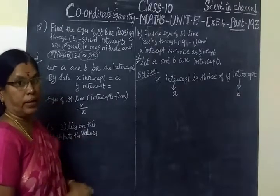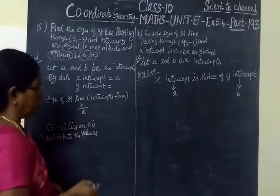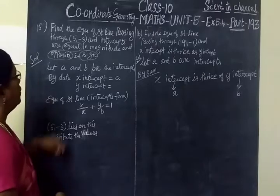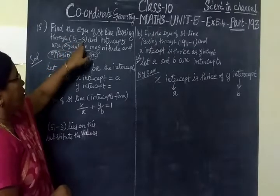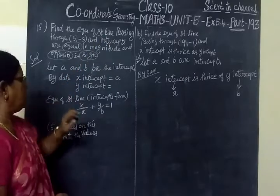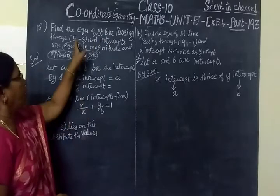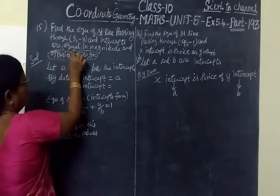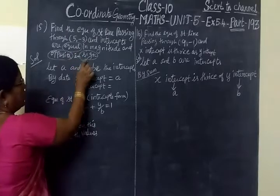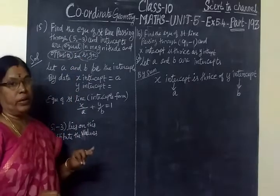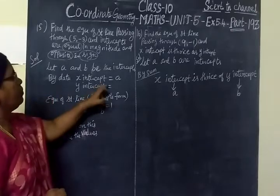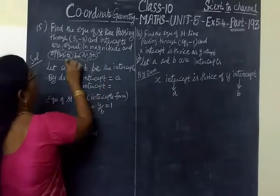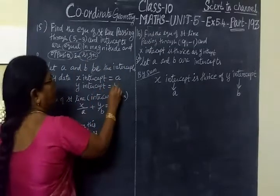In intercept form, A is the x-intercept and B is the y-intercept. So x by A plus y by B equals 1. The intercepts are equal in magnitude and opposite in sign, so if one intercept is A, the other intercept is minus A. So x-intercept is A and y-intercept is minus A.